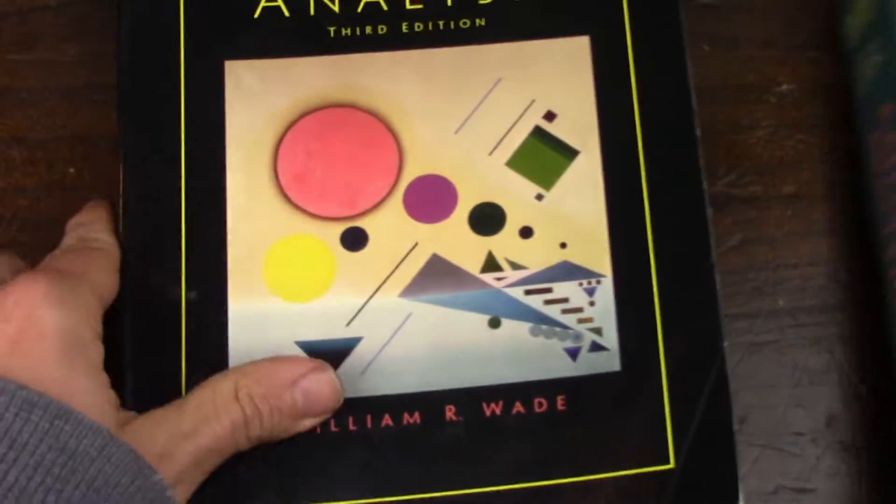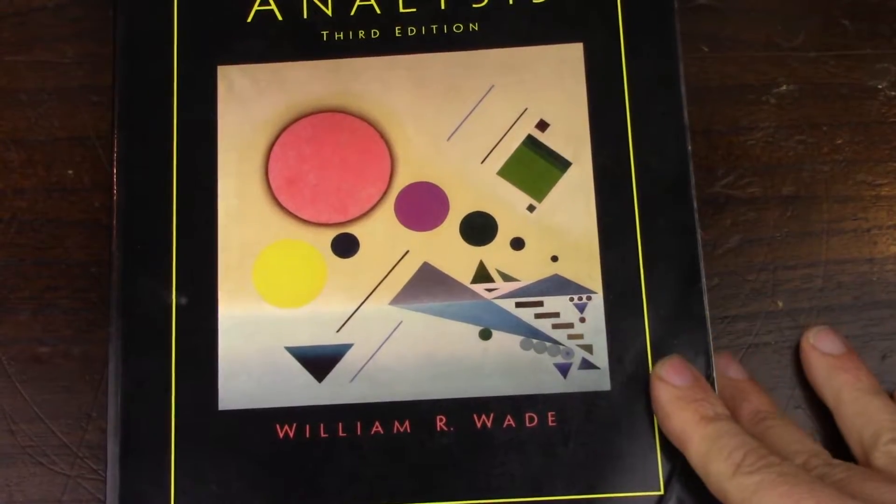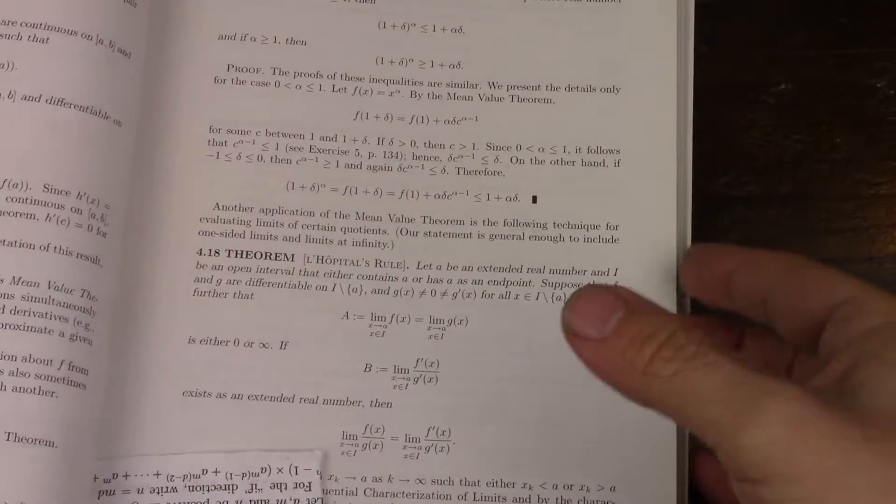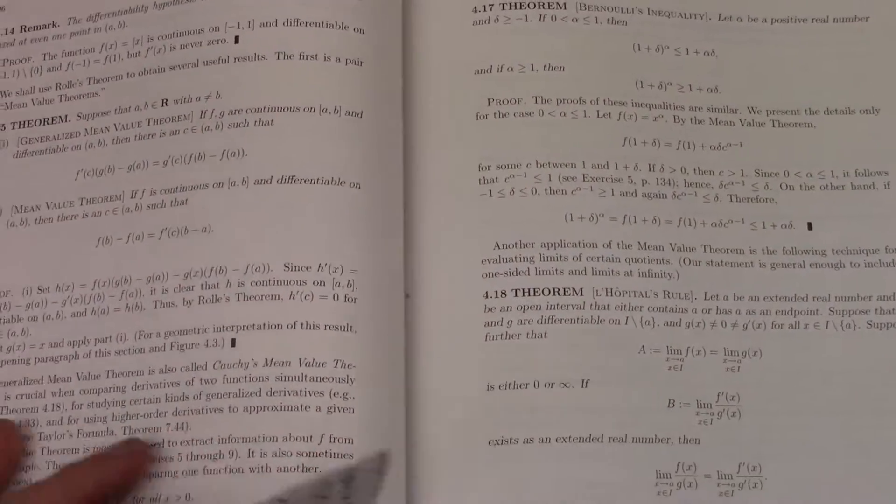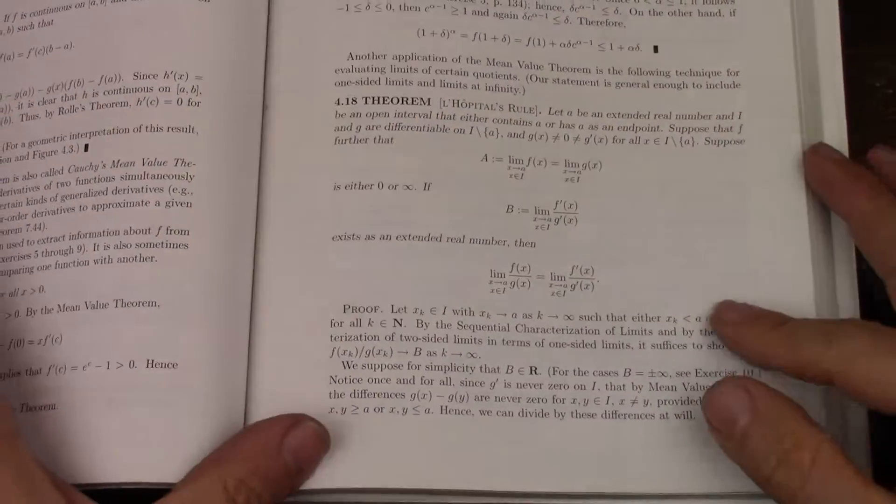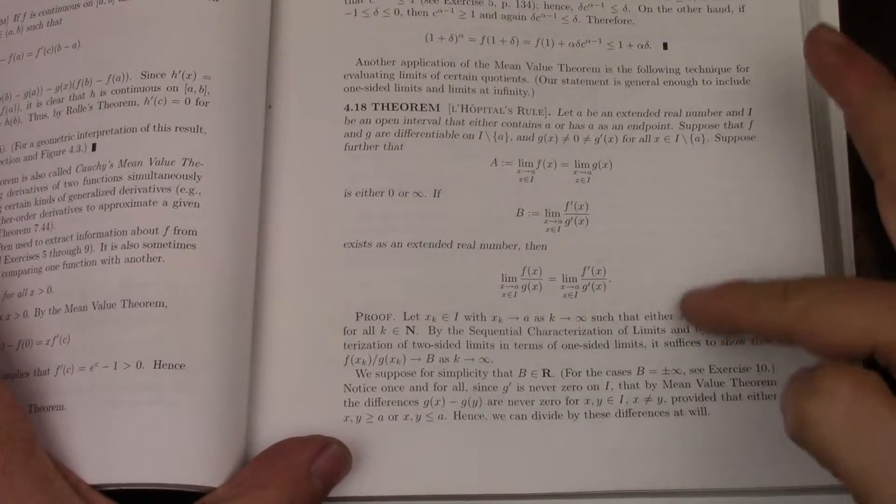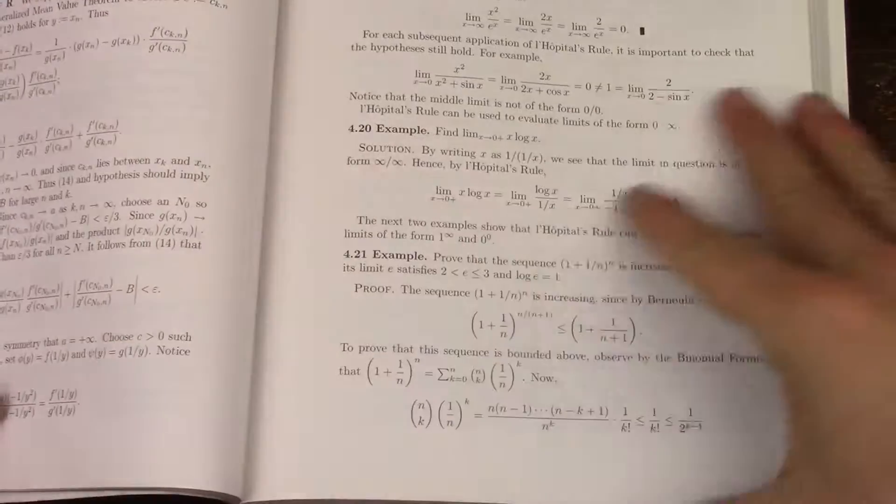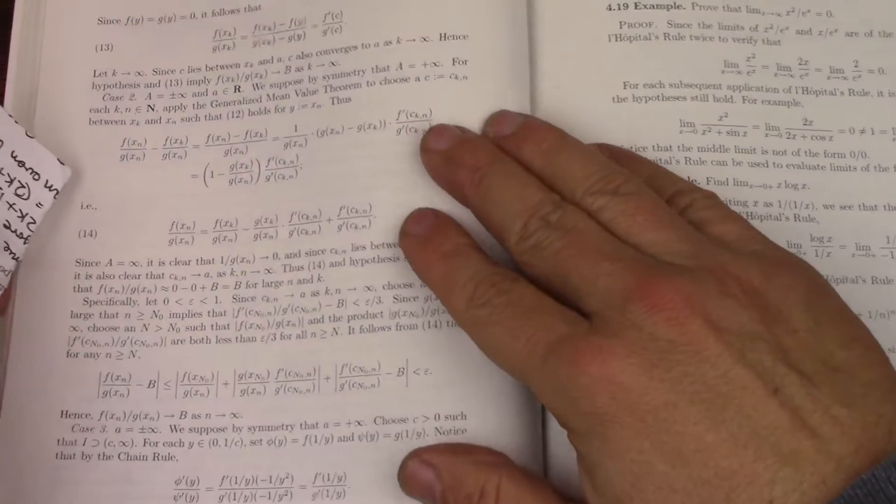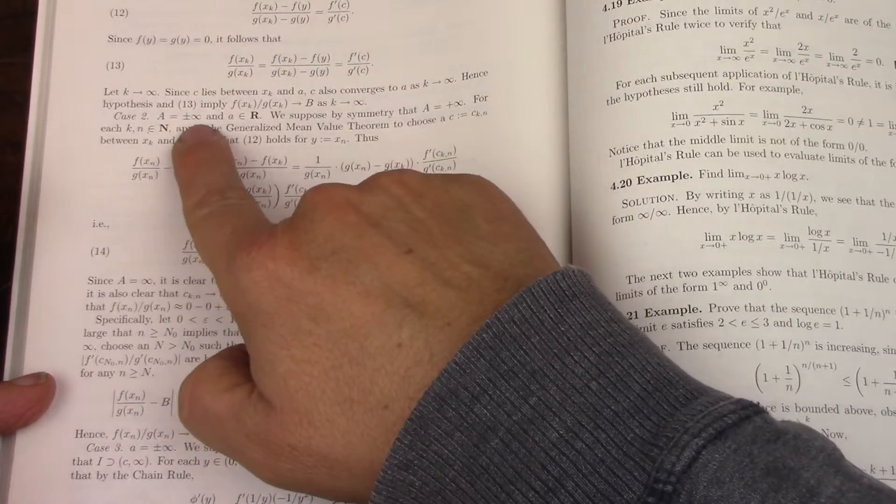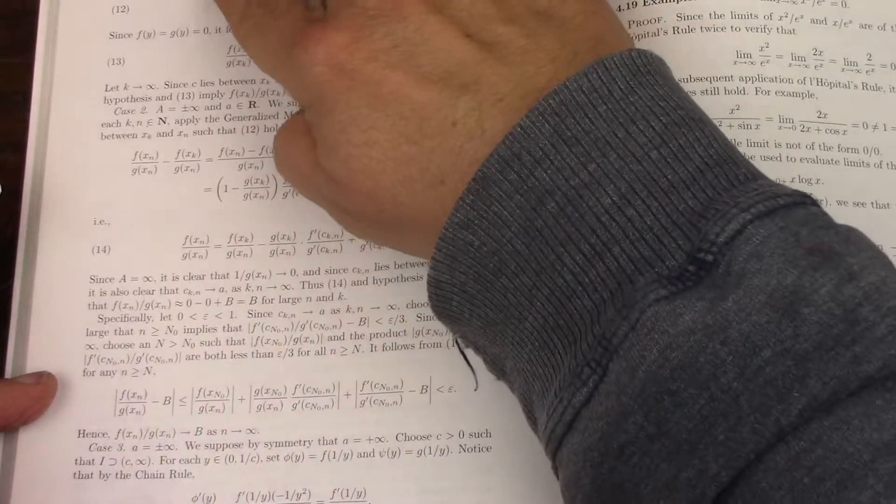When we go to Wade, that's where you get really an analysis style proof, where he doesn't really make it so simple as Thomas and Finney, but goes into detail of the proof, and doesn't really call them indeterminate forms, just calls them by cases for whether the limit is plus or minus infinity, whether it's zero.